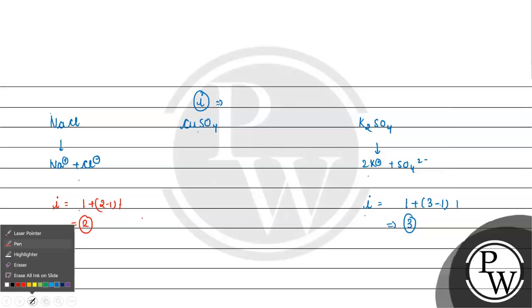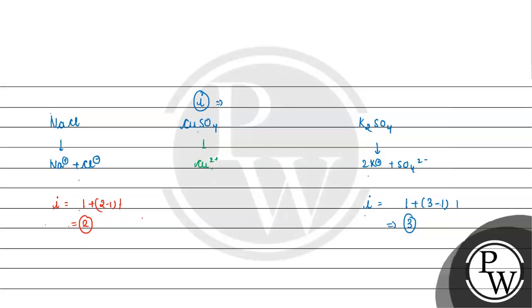For copper sulfate, we see Cu2+ and SO4 2- ions. In this case, we have 2 ions, and with complete dissociation, i will equal 2.